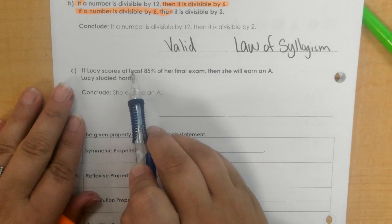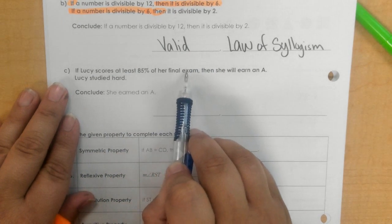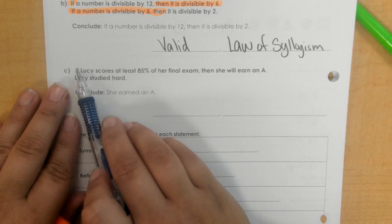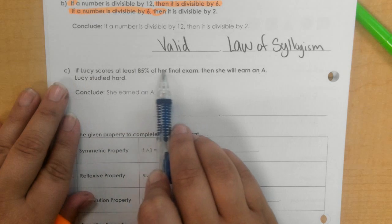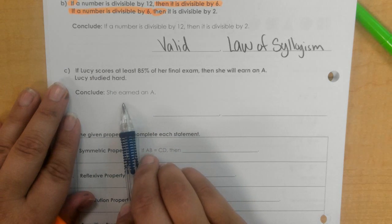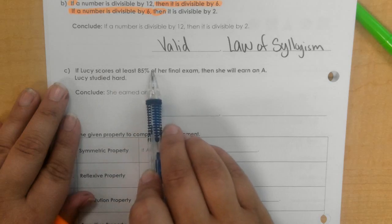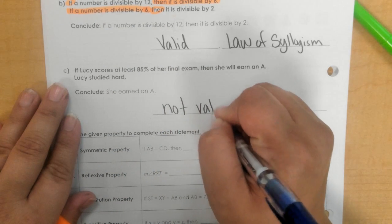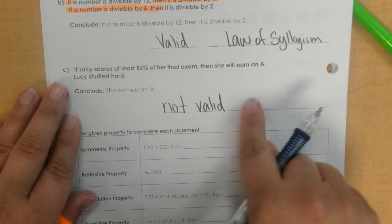Okay, here, if Lucy scores at least 85% on her final exam, then she will earn an A. Lucy studied hard. There is nothing to do with studying in this first part, okay? So we can't conclude that she earns an A. There was nothing about the studying here, so this is not valid. So I can't write anything here because it's just not valid.